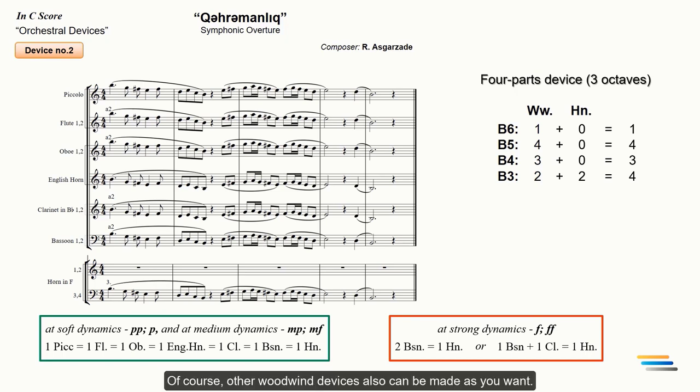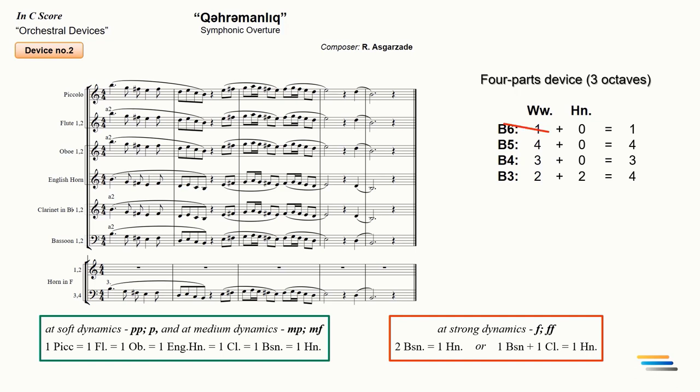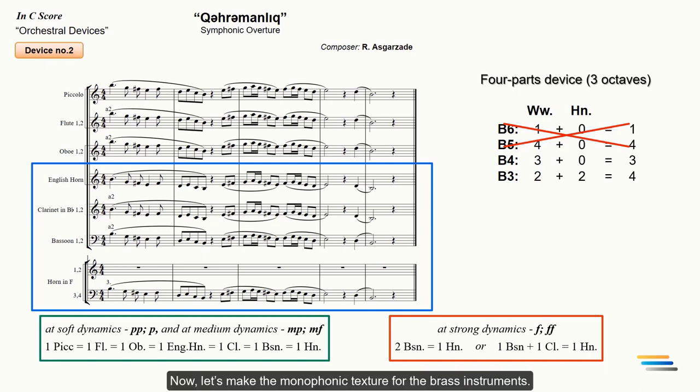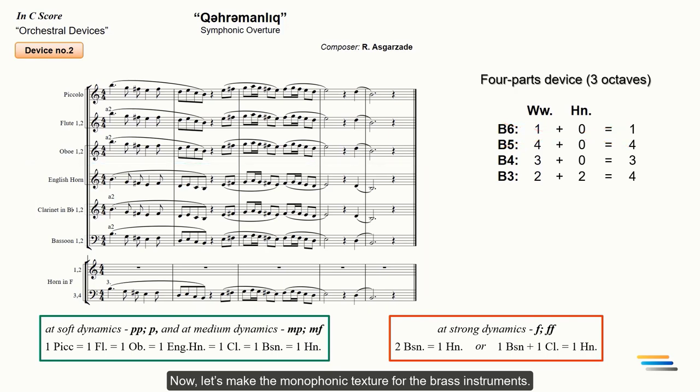Of course, other woodwind devices also can be made as you want. Now, let's make the monophonic texture for the brass instruments.